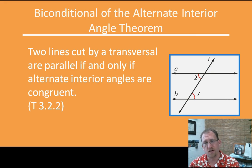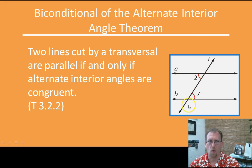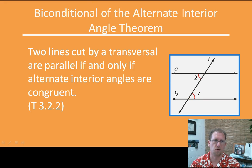Biconditional of the alternate interior angle theorem: two lines cut by a transversal are parallel if and only if alternate interior angles are congruent. Same idea, but now alternate interiors instead of alternate exteriors. If the alternate interiors are congruent, then the lines are parallel. Or, if the lines are parallel, then the alternate interior angles are congruent. These are just manipulations of things you already know.